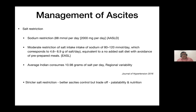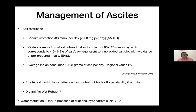Very strict salt restriction to 1–2 g/day may improve ascites control, but the trade-off is that food becomes unpalatable, compromising nutrition — patients restrict food intake and become malnourished. Given the choice between a dry, frail patient versus a wet, robust patient, you would always choose the wet, robust patient. Water restriction is not routinely required; it should be done only in the presence of dilutional hyponatremia, when sodium levels fall below 120–125 mEq/L.